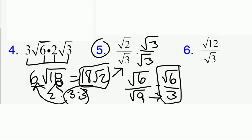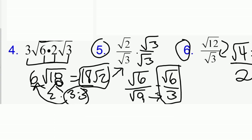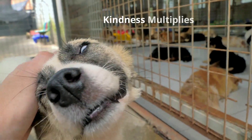For number 6, you might think we need to rationalize by multiplying by the square root of 3, but we don't. Because 3 is a factor of 12, we can just divide directly. Anything inside the radical can be divided, so the square root of 12 divided by the square root of 3 is just the square root of 4, which simplifies to 2. So 2 is our final answer. We'll be right back.